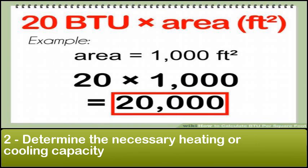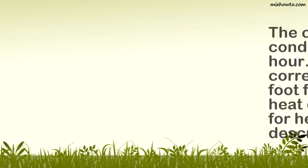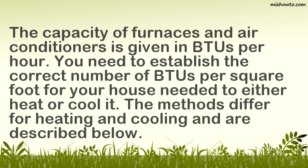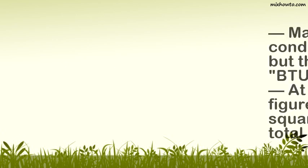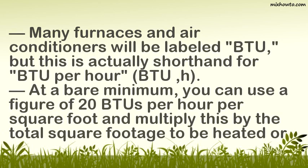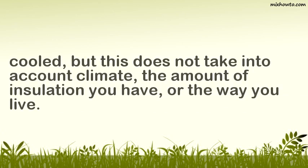To determine the necessary heating or cooling capacity: the capacity of furnaces and air conditioners is given in BTUs per hour. You need to establish the correct number of BTUs per square foot for your house needed to either heat or cool it. The methods differ for heating and cooling and are described below. Many furnaces and air conditioners will be labeled BTU, but this is actually shorthand for BTU per hour (BTU/H). At a bare minimum, you can use a figure of 20 BTUs per hour per square foot and multiply this by the total square footage to be heated or cooled, but this does not take into account climate, the amount of insulation you have, or the way you live.